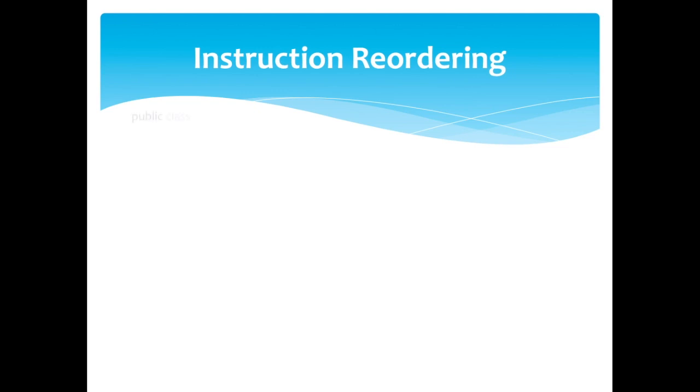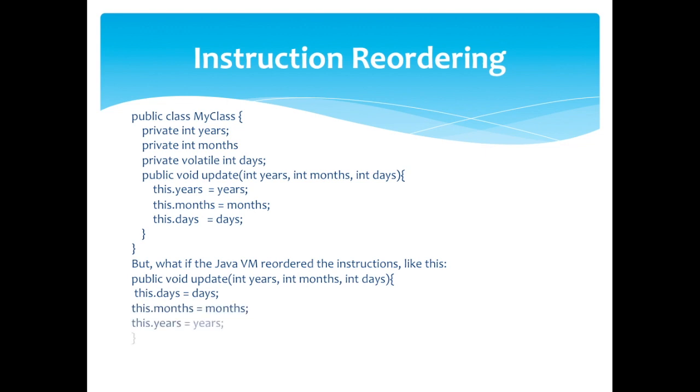But when there is a volatile variable involved, it poses a challenge. Let us study this example. Here closely look the update method. Once the update method writes a value to days, the newly written values to years and months are also written to main memory.